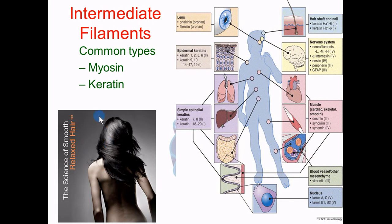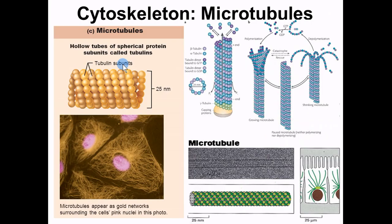A common place you find intermediate filaments is in myosin, which we'll see a lot in muscle tissue. Also keratin — which is all over the place. Keratin is in your skin, giving it strength and helping waterproof it. It's in your nails, making them hard — that's called hard keratin. It also gives your hair strength. These are things we'll come back to when we talk about skin and muscles.